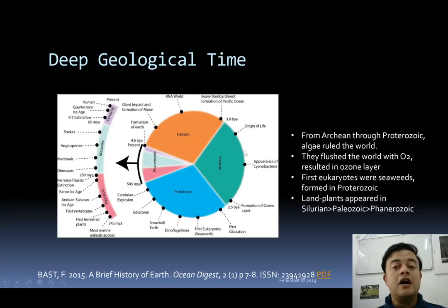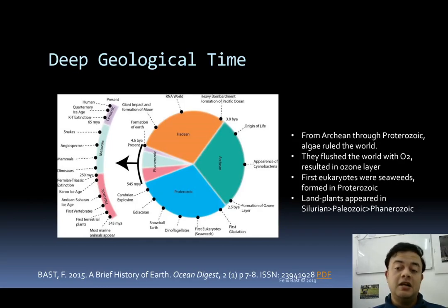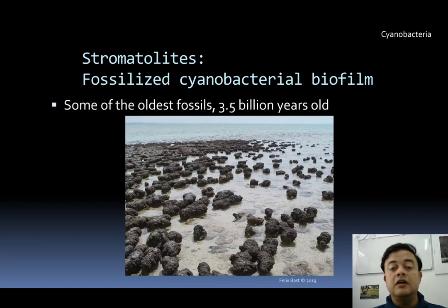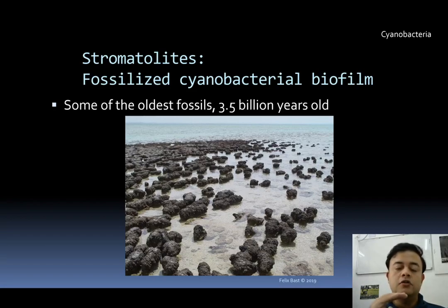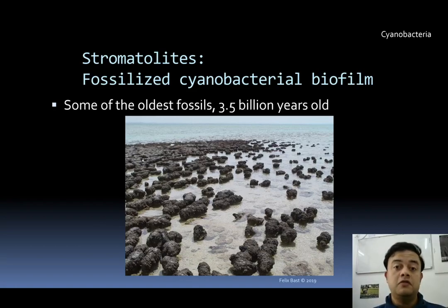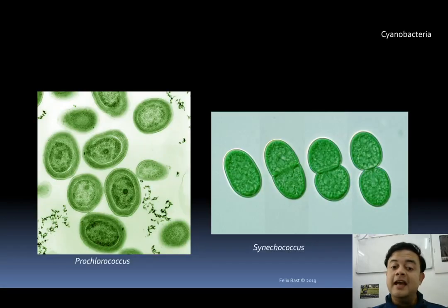Throughout the early Proterozoic and end of Archean, it was only cyanobacteria that ruled planet Earth. The land plants we study in classic botany developed much later in the Silurian of the Phanerozoic. The earliest non-fossils are also cyanobacterial biofilms, deposited one on top of another, forming a rock-like structure called stromatolites — some of the oldest fossils at 3.5 billion years old.